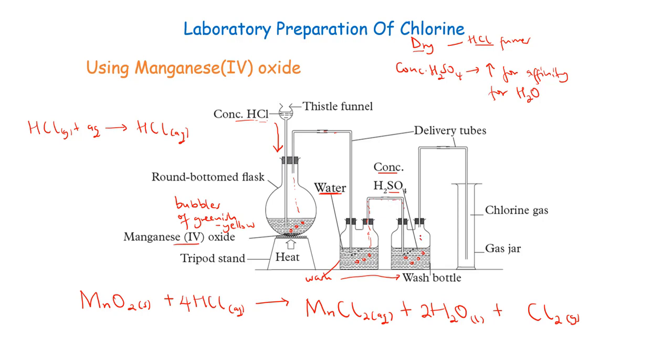So our chlorine will continue and then it will be collected by downward delivery. This is downward delivery, meaning that the gas is being collected in the downward direction. Because chlorine is denser than air, we shall collect it downwards. This is also known as upward displacement of air, downward delivery because chlorine is denser than air.